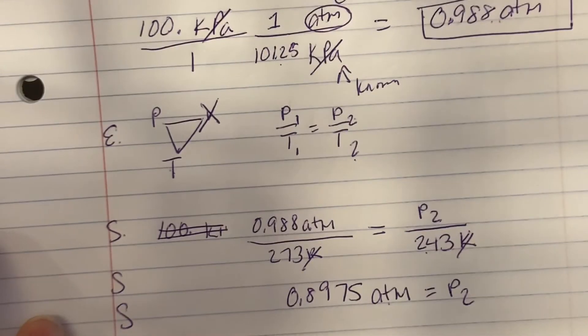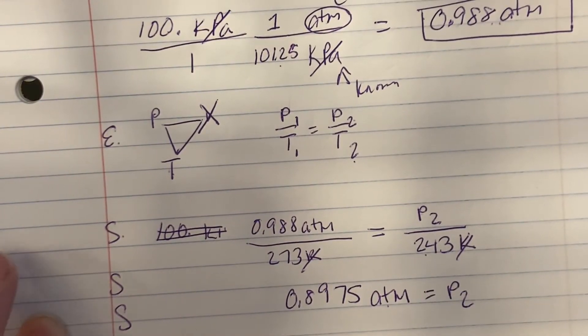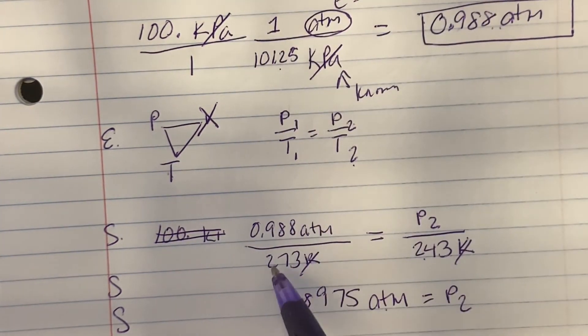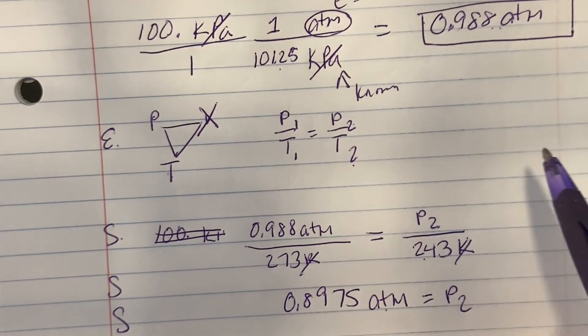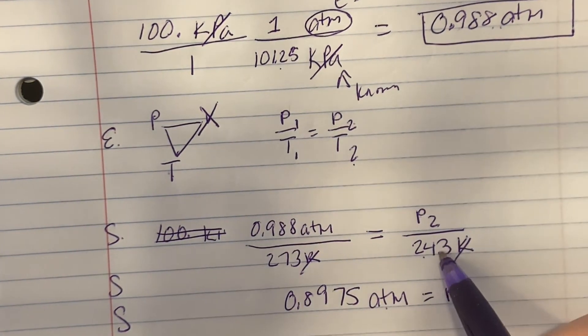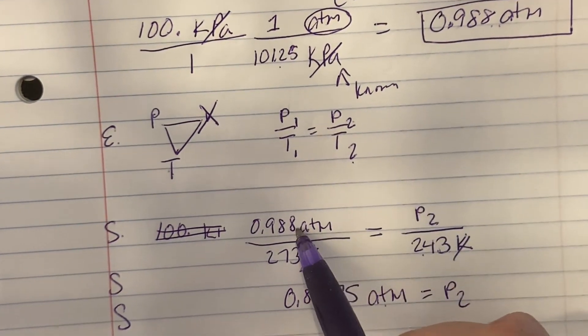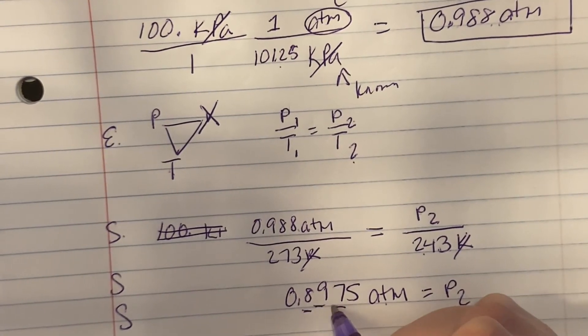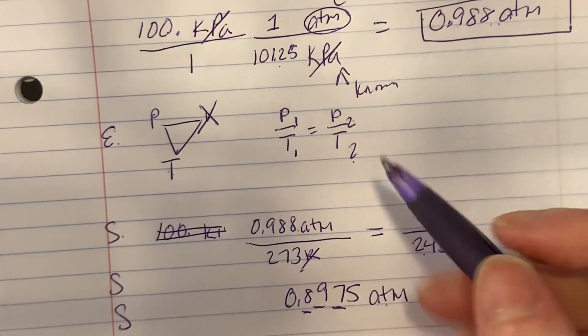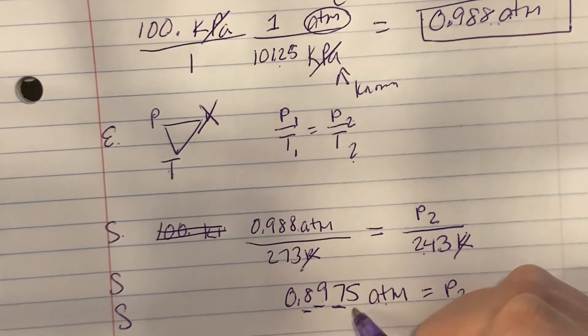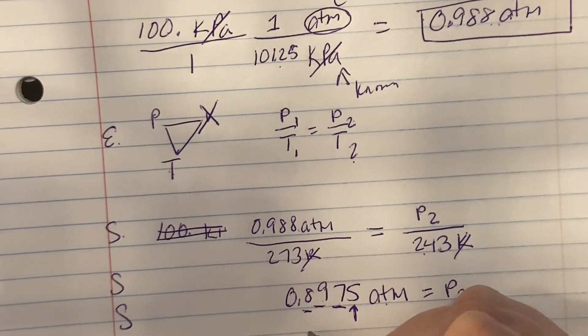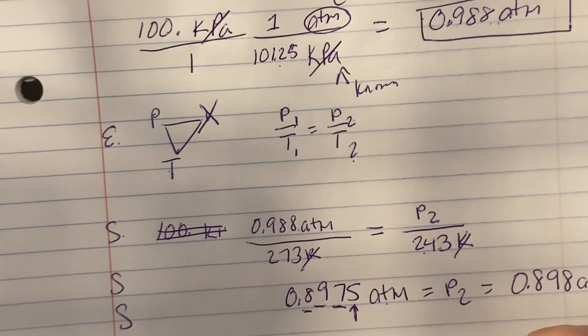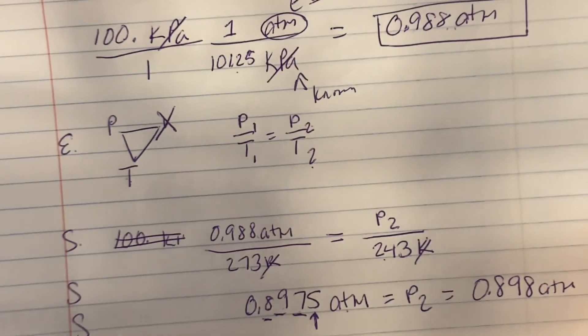I substituted, I solved, and now it's sig fig. I have 273, 3 sig figs. 248, 3 sig figs. 0.988, 3 sig figs. So I need my answer in 3 sig figs. The leading 0s never significant, but the 8, 9, and 7 are. And then the 5 says I need to round up. 0.898 atmospheres is my answer.